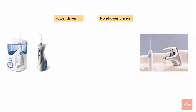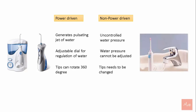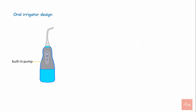There is a difference between powered and non-power-driven oral irrigators. Power-driven irrigators generate a pulsating jet of water, whereas non-power-driven have uncontrolled water pressure. Power-driven irrigators are adjustable and have a dial for regulation of water pressure, which cannot be adjusted in non-power-driven irrigators. Tips of power-driven irrigators can rotate 360 degrees, while the tip needs to be changed for non-power-driven irrigators. The oral irrigating device has a built-in pump that generates the pressure and a tip that guides the solution into the target area.